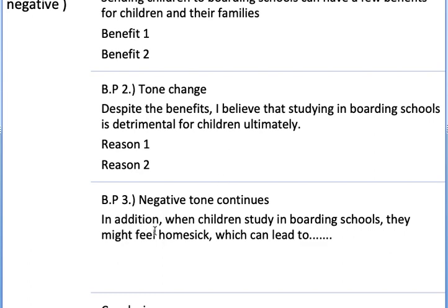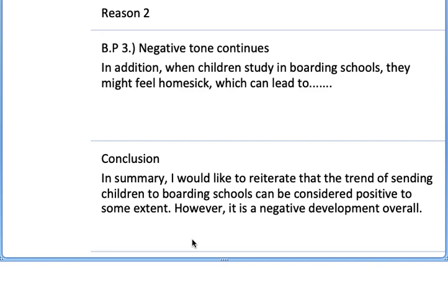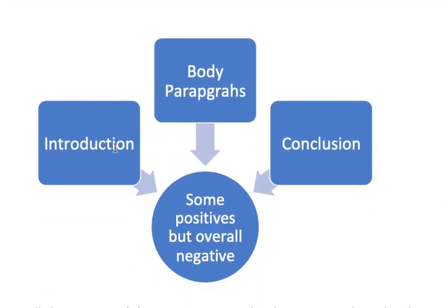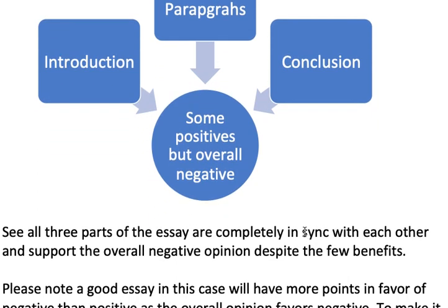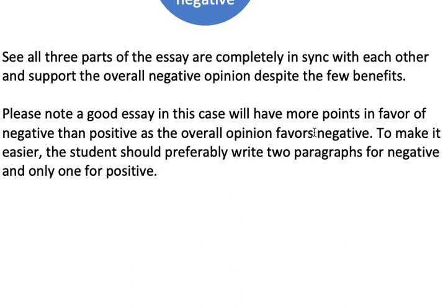In body paragraph 3 I can start with 'In addition,' continuing what I said in the second paragraph: 'In addition, when children study in boarding schools they might feel homesick, which can lead to...' Conclusion: 'In summary, I would like to reiterate that the trend of sending children to boarding schools can be considered positive to some extent; however, it is a negative development overall.' All three parts — introduction, body, and conclusion — are in sync and support the overall negative opinion despite a few benefits. Note: a good essay here will have more points for negative than positive, so preferably write two paragraphs for negative and only one for positive.